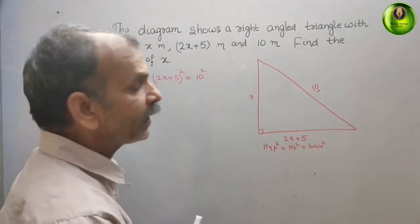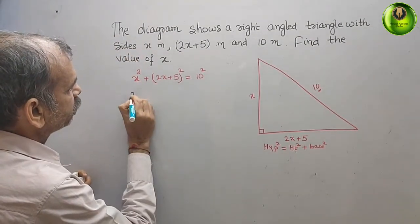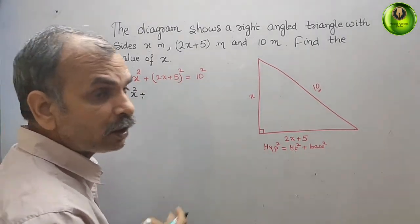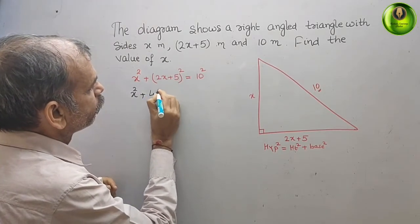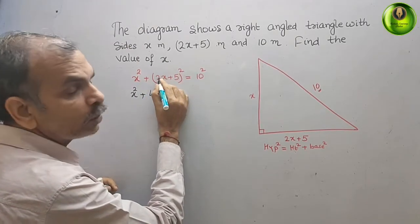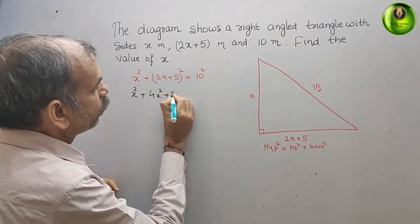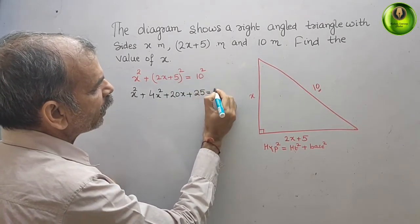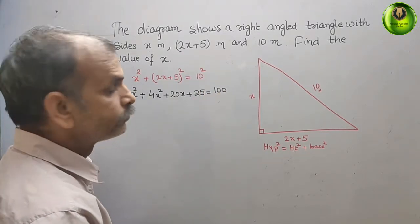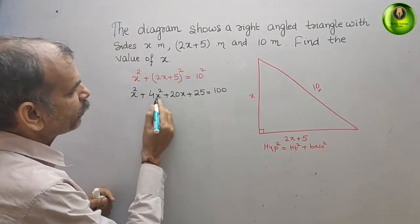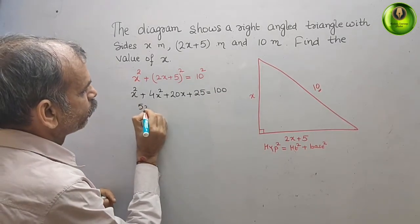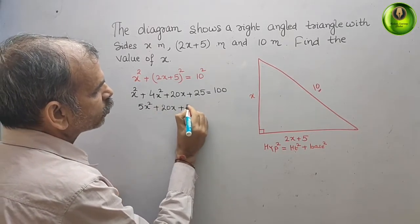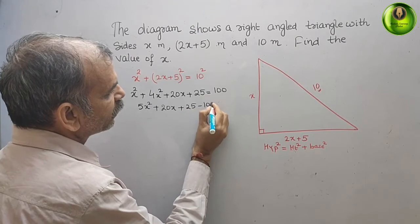Now we solve this. We expand: x squared plus (2x plus 5) whole squared gives us 4x squared plus 20x plus 25. And 10 squared is 100. So we get 5x squared plus 20x plus 25 equals 100.